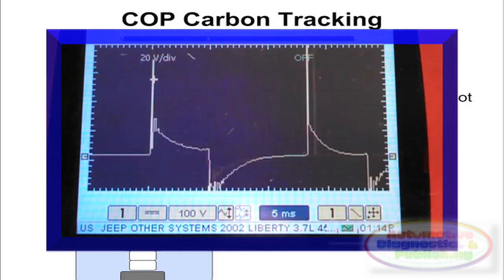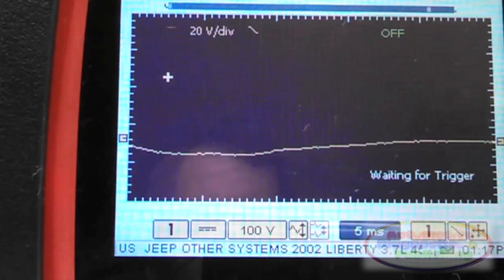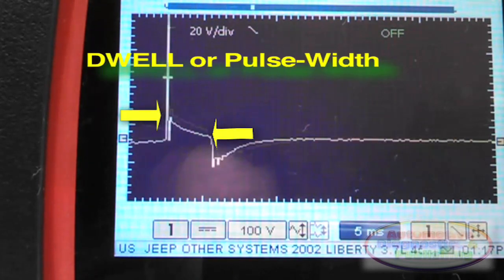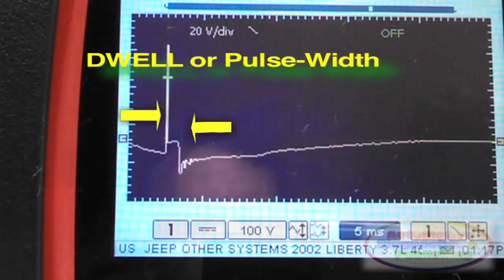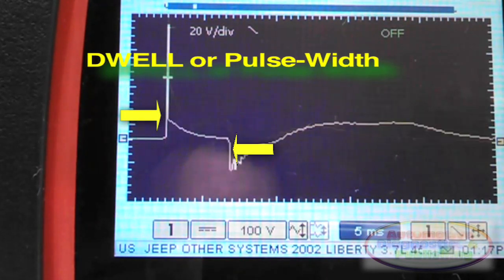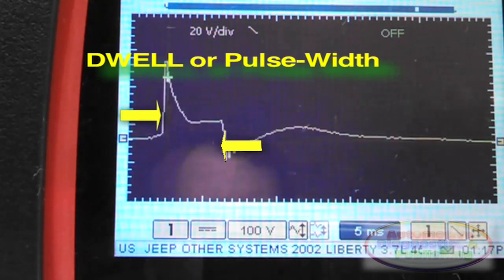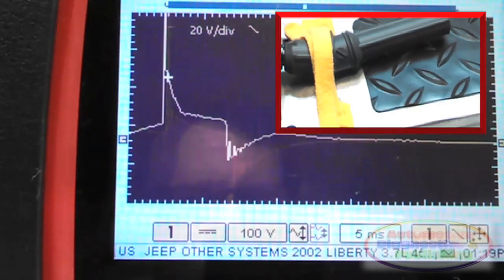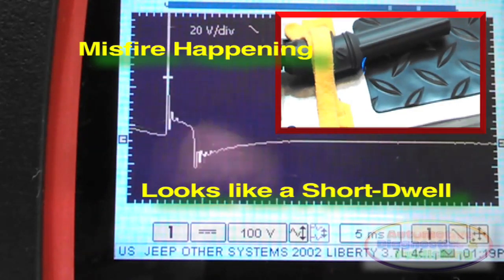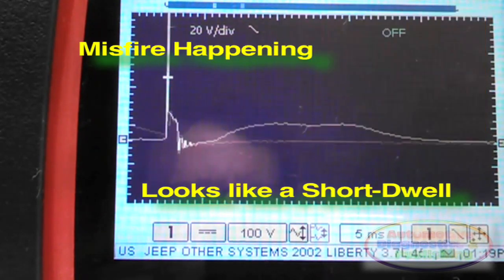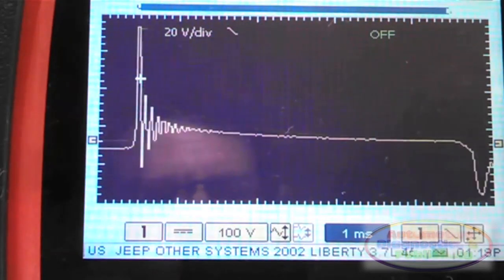Seen here, you can see how the ignition waveform changes as we increase the RPM. We can also change the dwell or ignition coil pulse width. With the zapper, ignition probe and oscilloscope, we can actually see what happens during a carbon tracking misfire. The ignition waveform may look slightly different because we are not using a real spark plug.